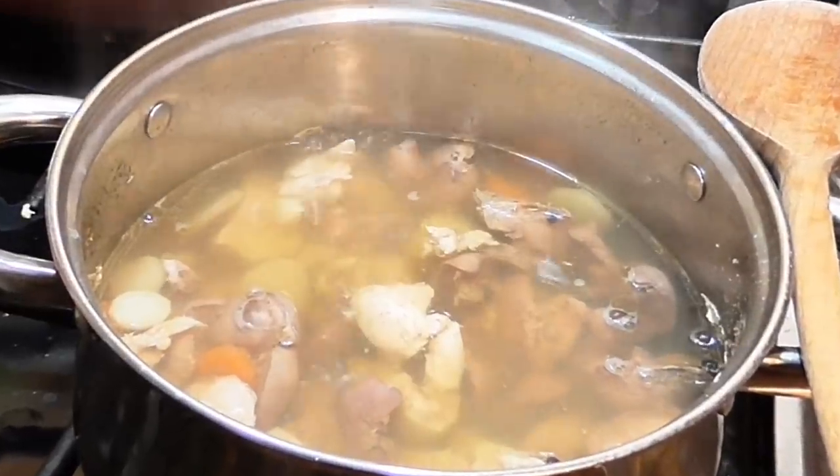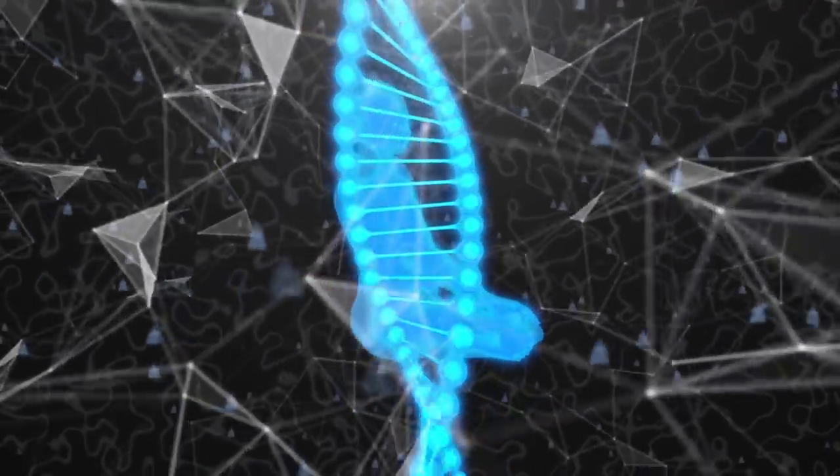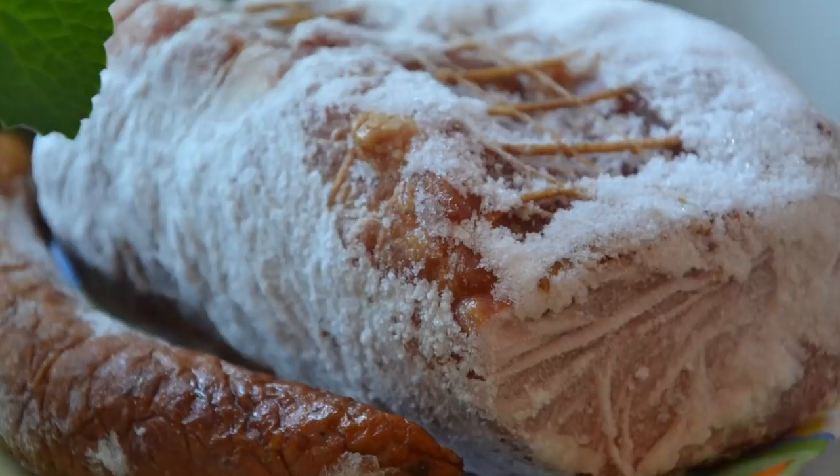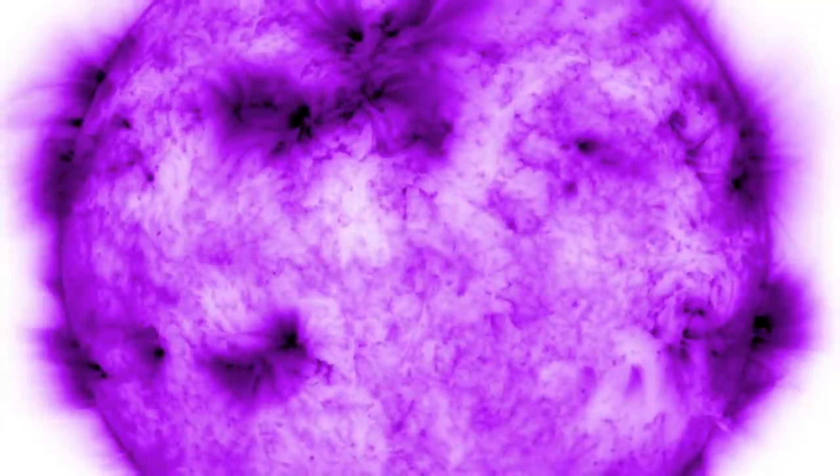Even if you boil meat several times, this doesn't guarantee safety. After all, prions can't be killed. That is, of course, if one can even call anything without a genome living. Boiling, drying, freezing, treating with alcohol and acids, ultraviolet and gamma radiation, none of these can destroy a prion.